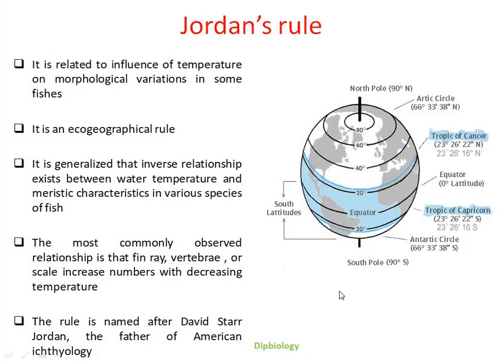Hello friends, welcome to my channel Deep Biology. Today we will learn about Jordan's Rule, which is an important ecological concept. This rule is an ecogeographical rule and it is related to the influence of temperature on morphological variation in some fishes. The name of this rule was given after David Starr Jordan,